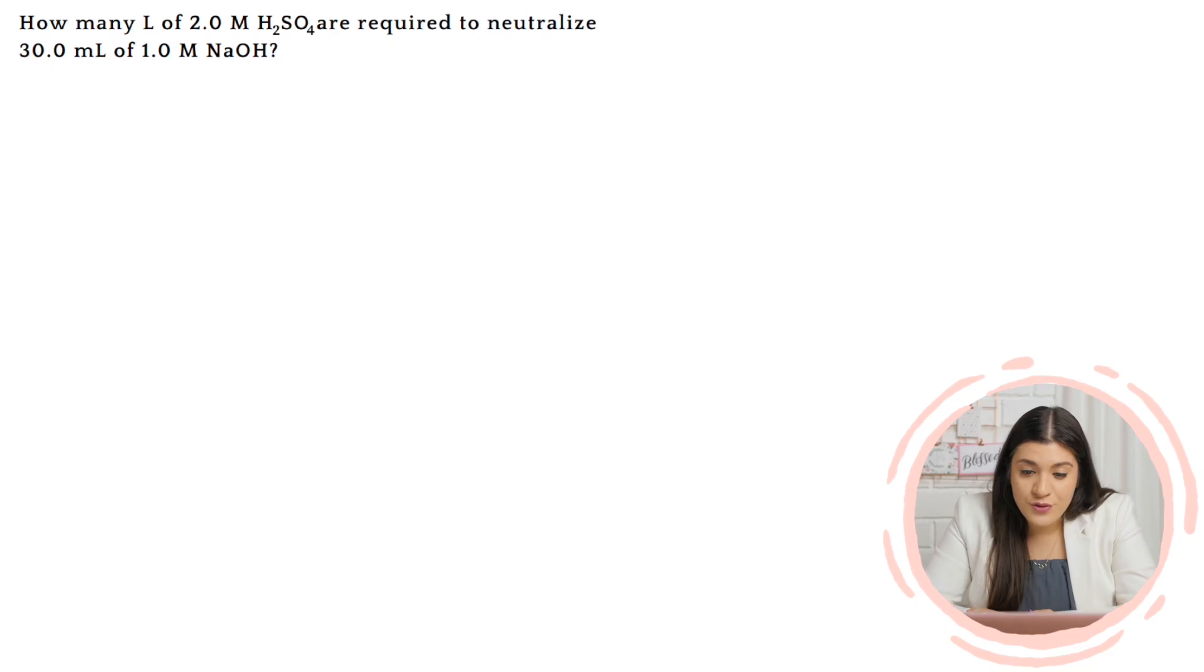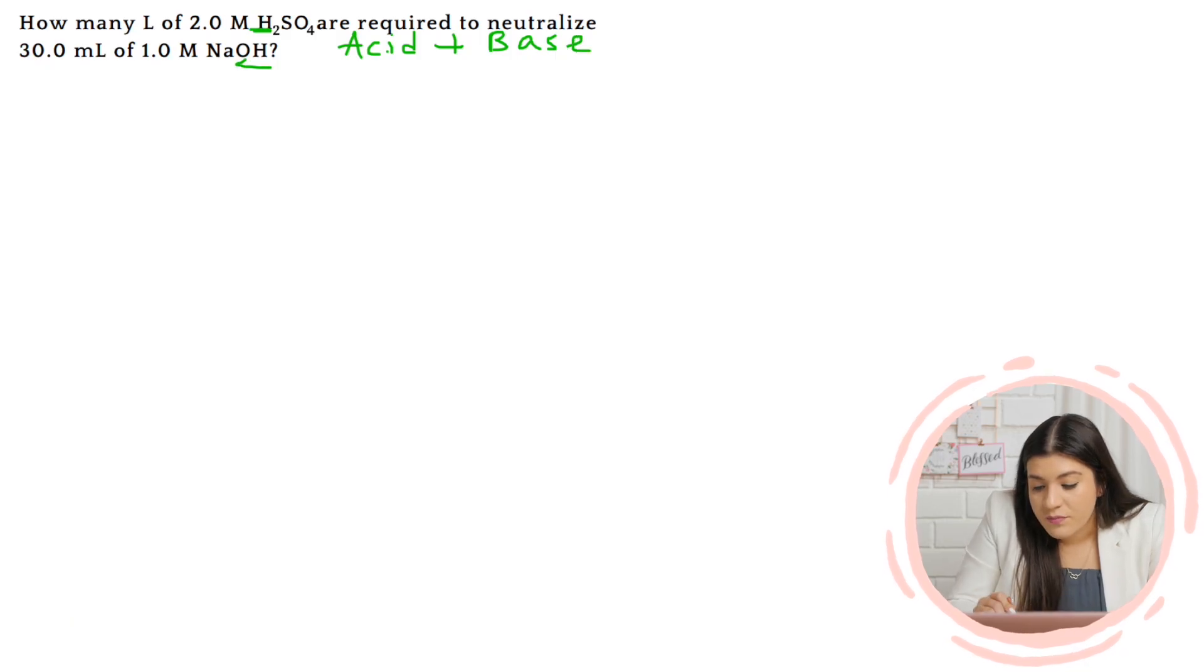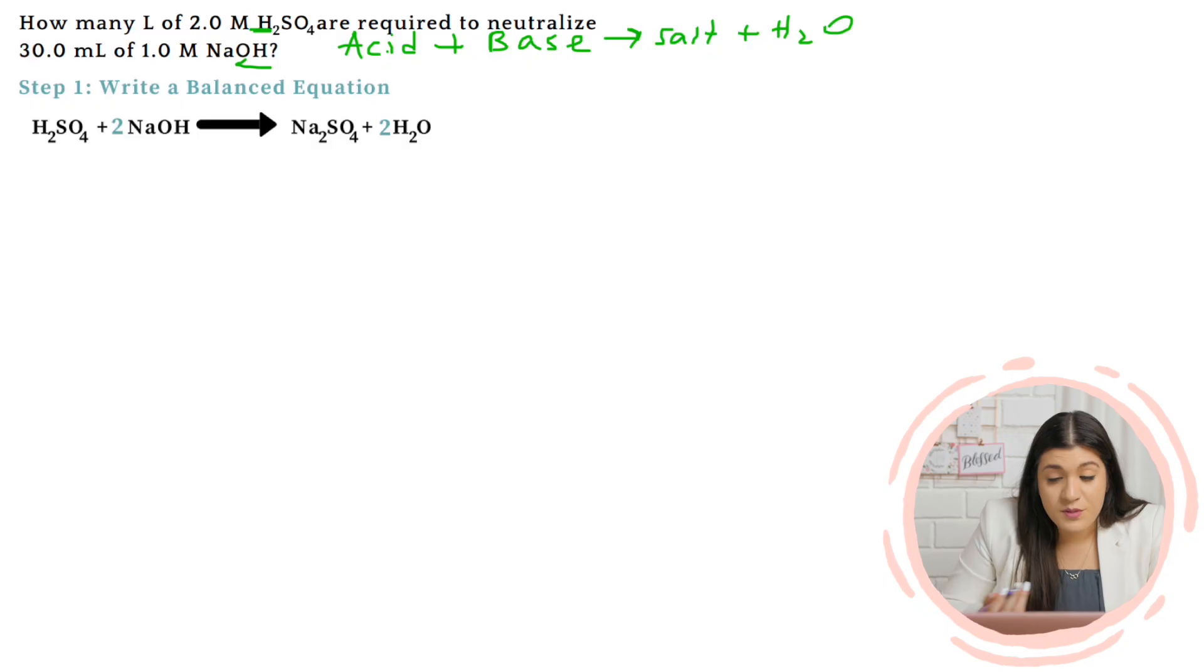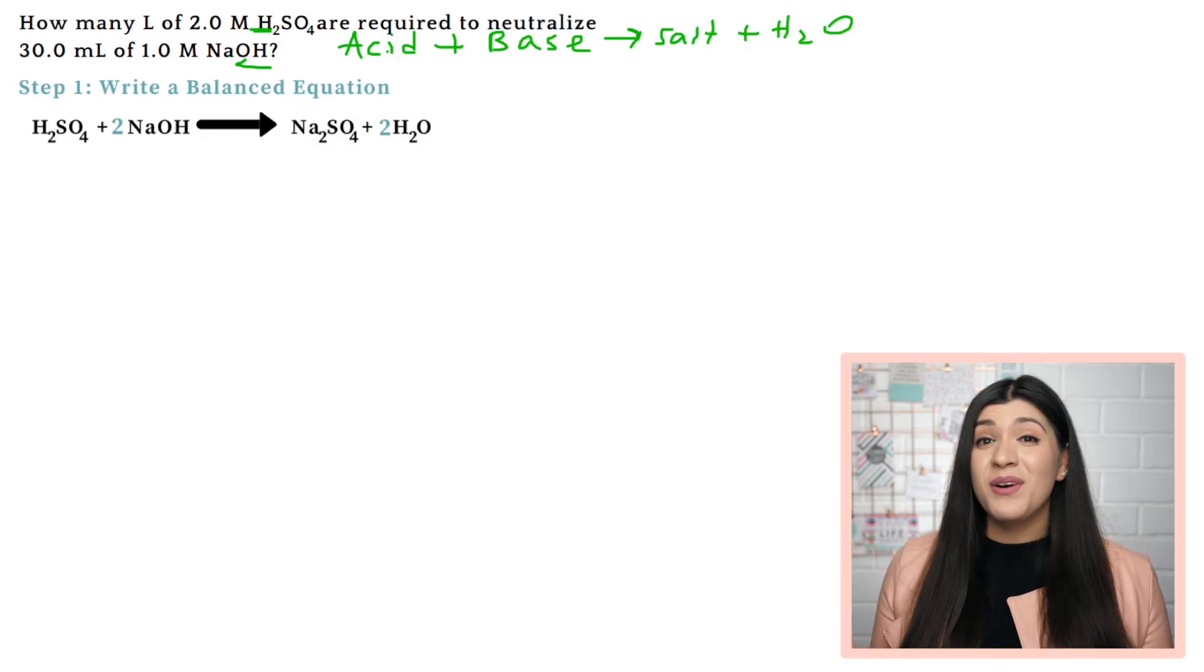This is an acid-base neutralization reaction where we have an acid. We know our acid starts with H, because acids start with H. We're going to add that to a base. We know bases end with OH, and this is going to produce salt and water. That is always the case for an acid-base neutralization reaction. So I know this is pretty much what I'm going to have. That was my clue to write this balanced equation. You won't always be given a balanced equation. You will have to figure it out and create it.